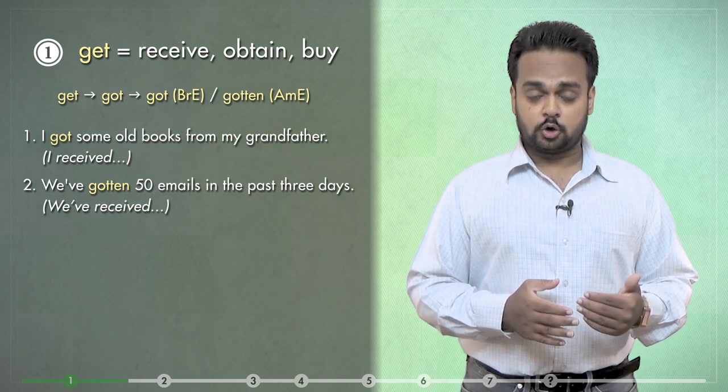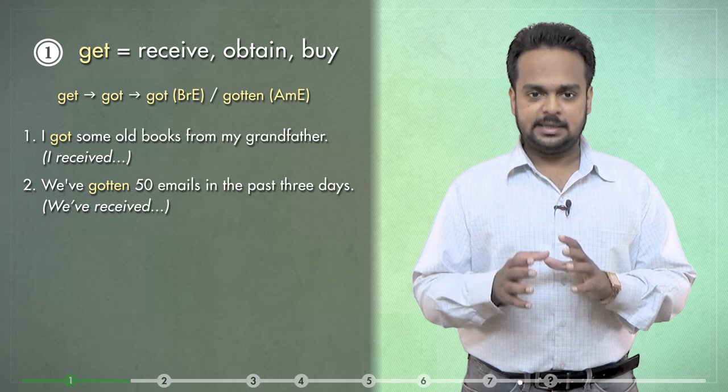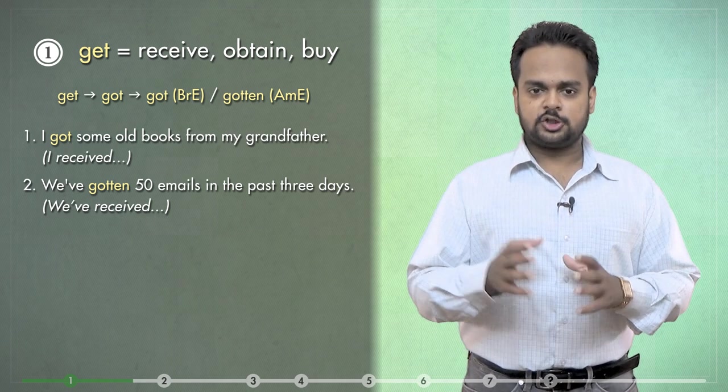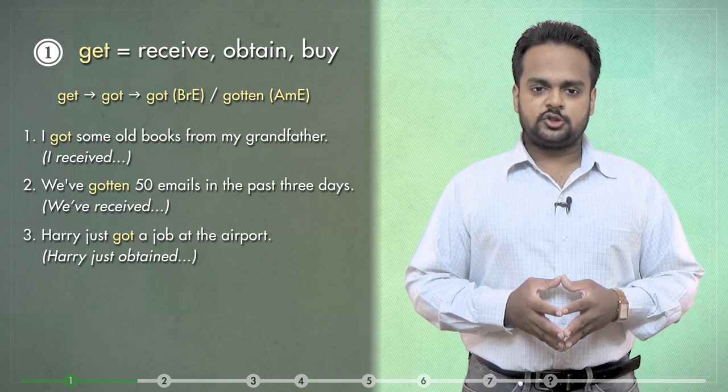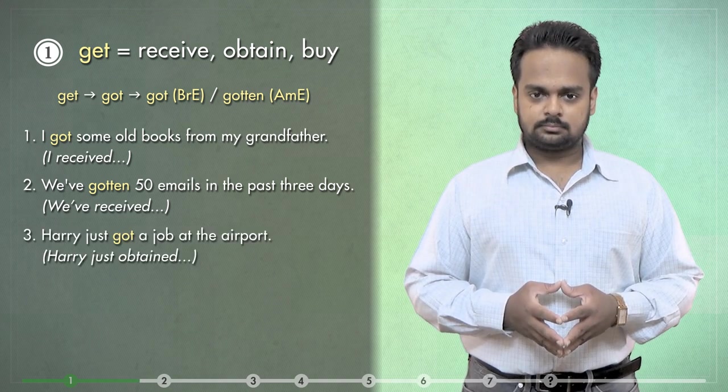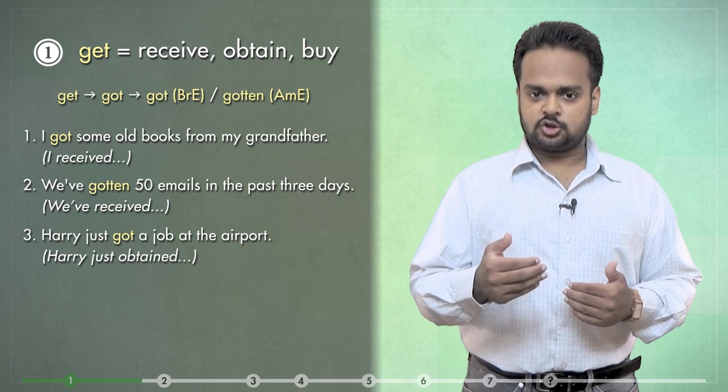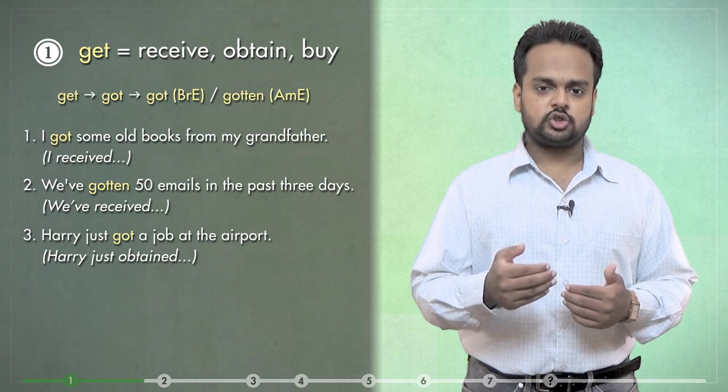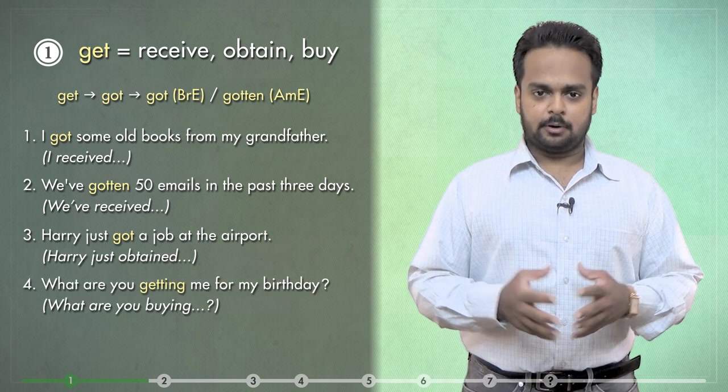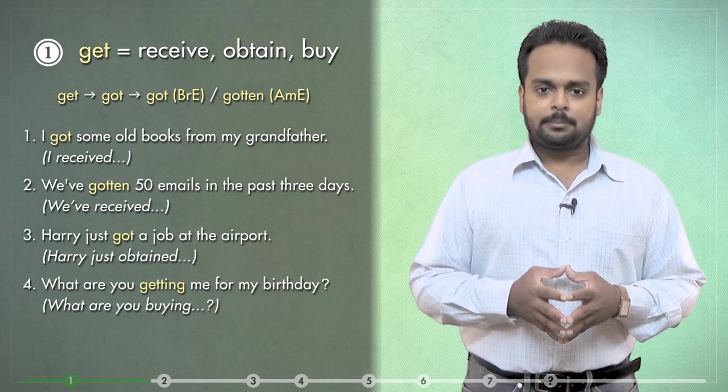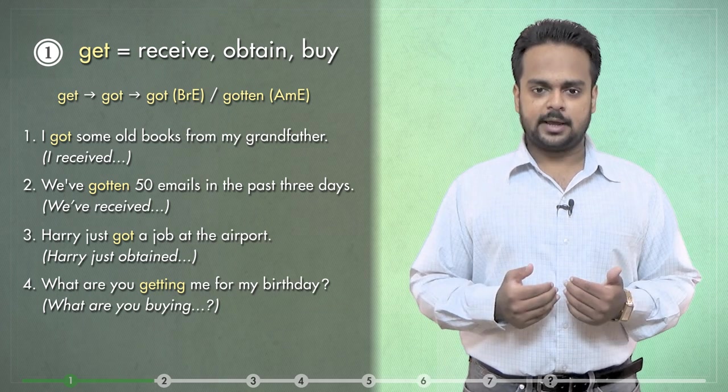So in number two, you could say, we've got 50 emails. That would be the British English form. Here are two more examples. Harry just got a job at the airport. It means he obtained a job or that he was hired for a job at the airport. And finally, what are you getting me for my birthday? It means what present are you going to buy for me for my birthday?